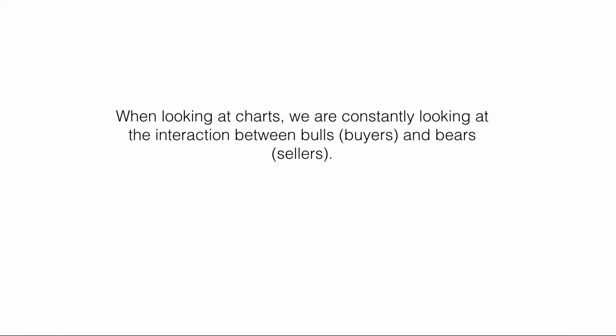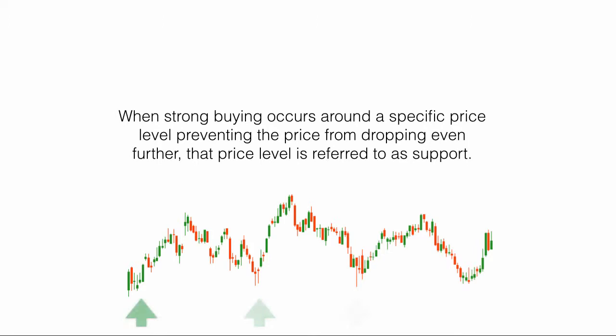When looking at charts, we are constantly looking at the interaction between bulls, the buyers, and bears, the sellers. When strong buying occurs around a specific price level, preventing the price from dropping even further, that price level is referred to as support.